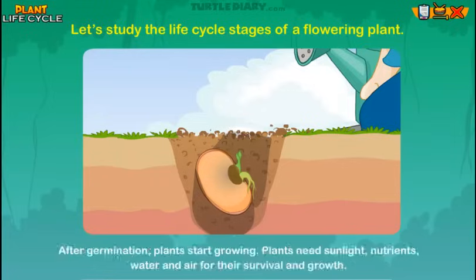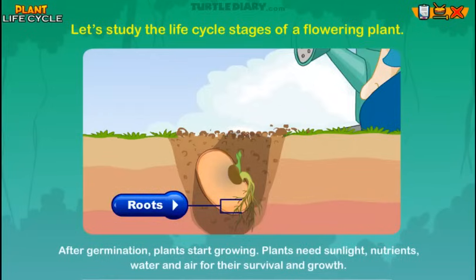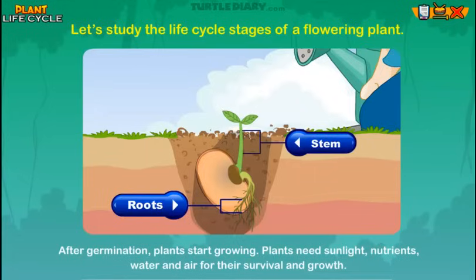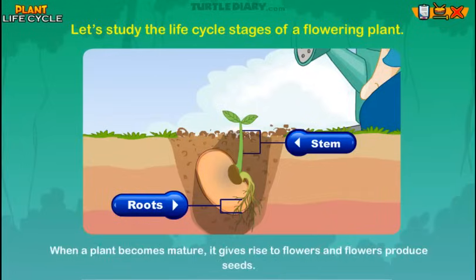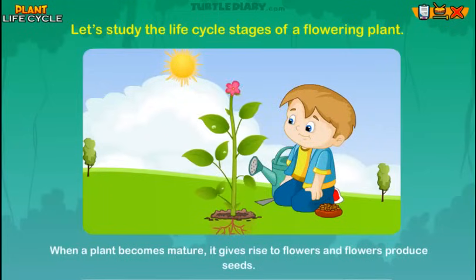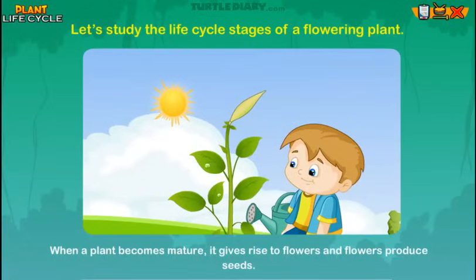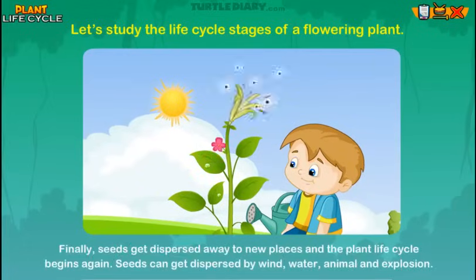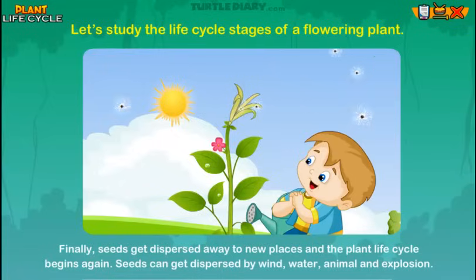After germination, plants start growing. Plants need sunlight, nutrients, water, and air for their survival and growth. When a plant becomes mature, it gives rise to flowers, and flowers produce seeds. Finally, seeds get dispersed away to new places, and the plant life cycle begins again.